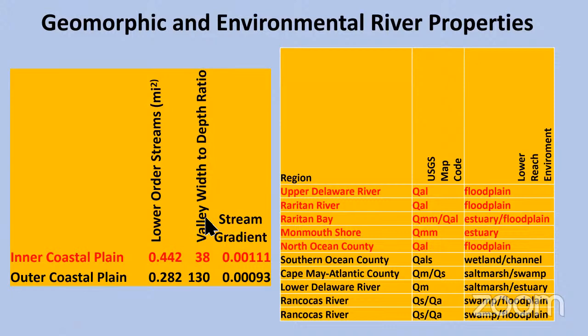The width-to-depth ratio: intercoastal plain streams have a small width-to-depth ratio, meaning they tend to be narrow and deep. Outer coastal plain streams have a big number, meaning they're wide and shallow. So when you go down the Mullica, the river is very wide and you can stand up in it and not drown. If you go to the intercoastal plain, the valleys are very steep and the rivers themselves are fairly deep. They have very different properties.